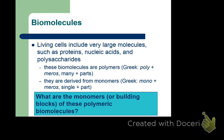Cholesterol is made from isoprenoid units. You can get from cholesterol to triglycerides but it's not a direct link. The monomers for each class: proteins → amino acids; DNA and RNA → nucleotides; polysaccharides → monosaccharides (the easiest one — people overthink it on exams).